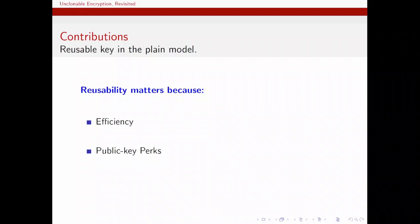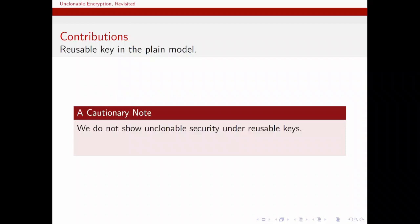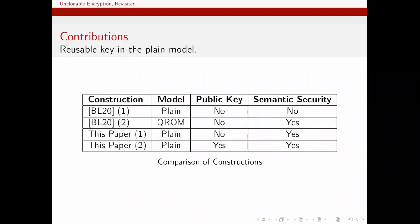This motivates our second construction, which is in the public key setting. Thirdly, in case we use unclonable encryption to construct other primitives, we might need reusability of the key in security proofs. It is important to note that in our work, we do not consider the issue of reusability as it pertains to unclonable security. We only take it into account in semantic security. This is not a big problem in the public key setting, since the adversary can generate ciphertexts himself. However, in the private key setting, a more delicate argument might be needed. Here is a table that summarizes the increment of our constructions, which is that they satisfy semantic security without having to use random oracle model.